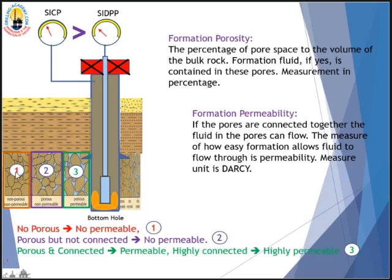Let's look at these rocks. In number one, we see solid rock with no porosity. In number two, we see some space between the rocks. In number three, we see these spaces are connected together. Porosity is the percentage of pore space to the volume of the bulk rock. Formation fluid, if present, is contained in these pores. Measurement is in percentage.